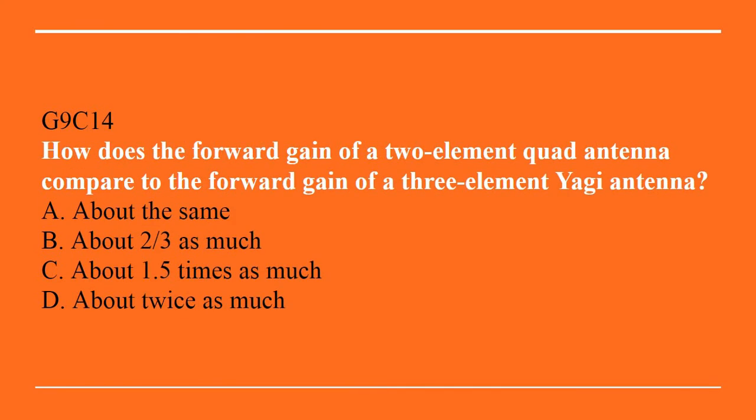G9C14: How does the forward gain of a two-element quad antenna compare to the forward gain of a three-element Yagi antenna? A. About the same. B. About two-thirds as much. C. About 1.5 times as much. Or D. About twice as much. The correct answer is A, about the same.